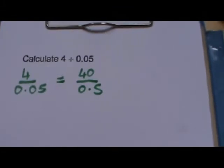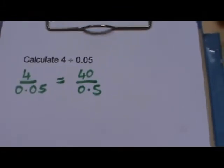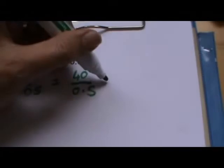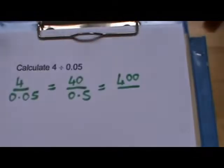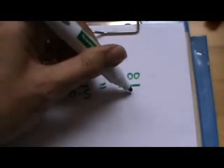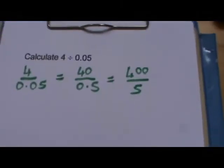OK, we've still got a decimal, though. So let's do that again. If we multiply it again by 10, we'll get rid of the decimal completely. So 40 times 10 is 400. And 0.5 times 10 is 5. So what we've found is that 4 divided by 0.05 is just the same as 400 divided by 5.